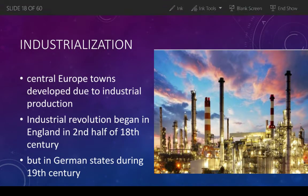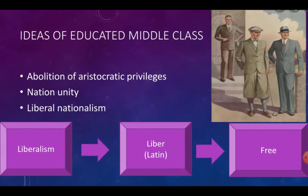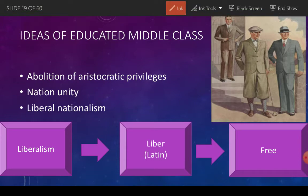Industrialization occurred in central European towns and came in the second half of the 18th century, but in Germany it arrived around the late 19th century. The middle class people had their own vision because they were an emerging new society. They wanted to end all aristocratic privileges, unite the nation by forming a nation-state, and they believed in liberal nationalism.